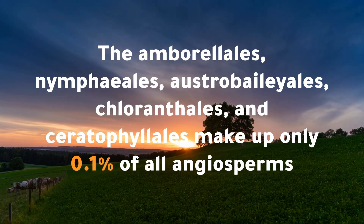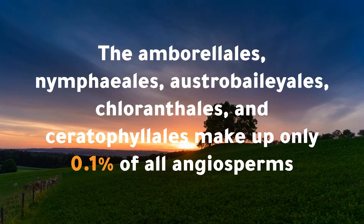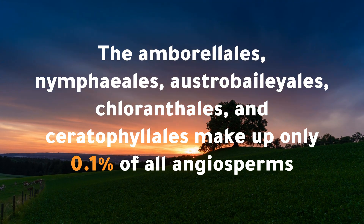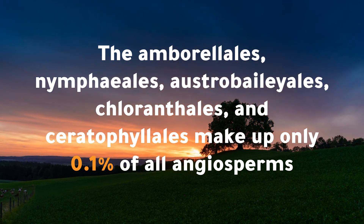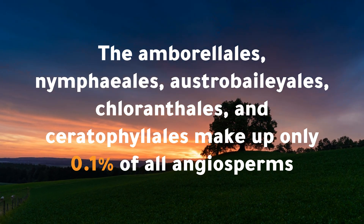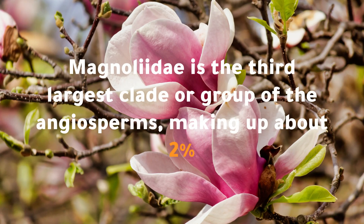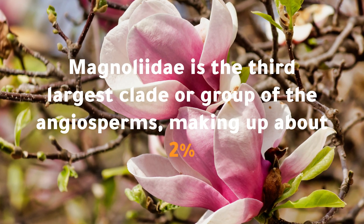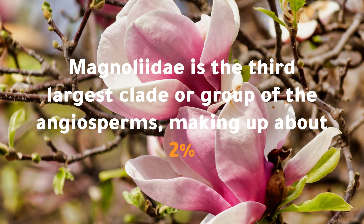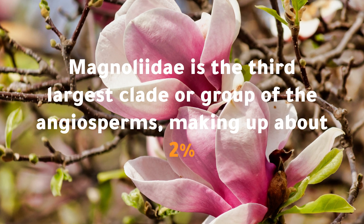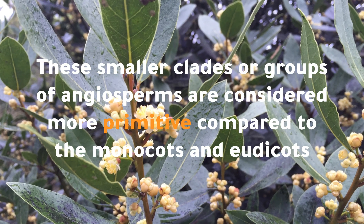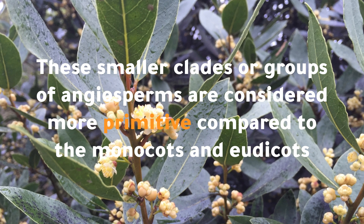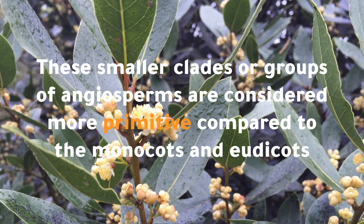The ambrillals, nymphials, ostrabaliols, chloranthales, and serotophilols make up only 0.1% of all angiosperms. Magnoliidae is the third largest clade or group of the angiosperms, making up about 2%. These smaller clades or groups of angiosperms are considered more primitive compared to the monocots and eudicots.